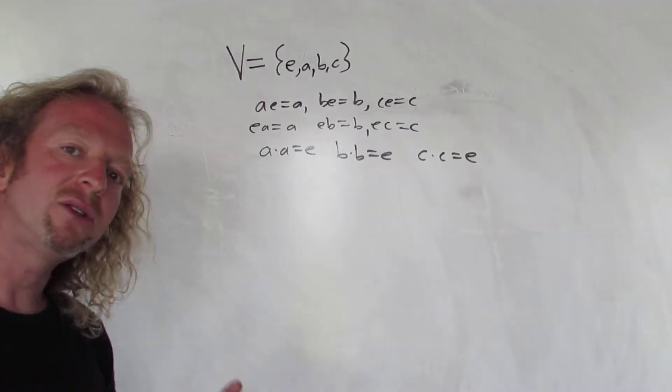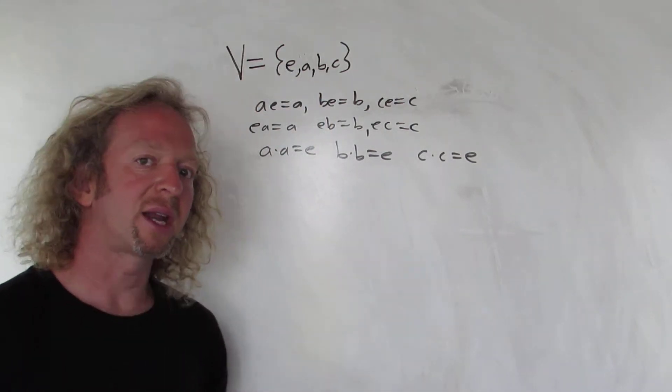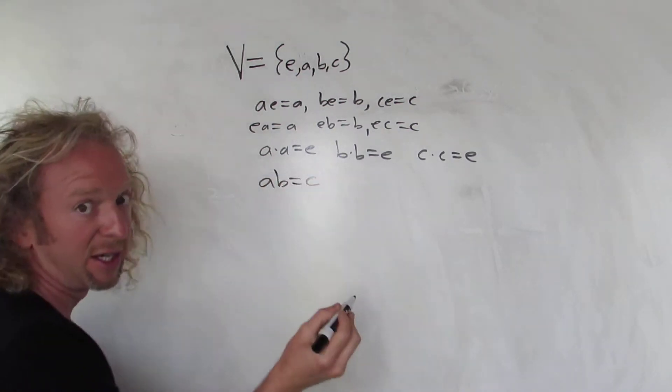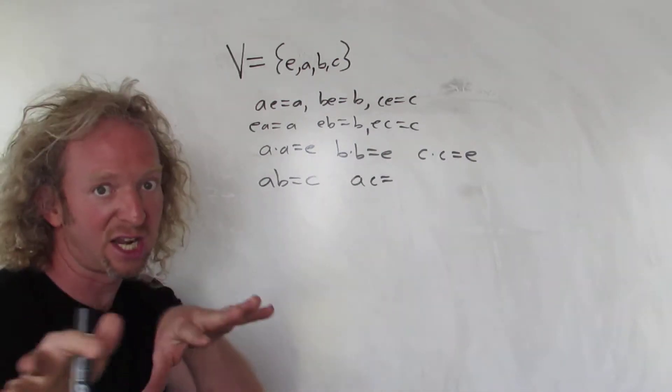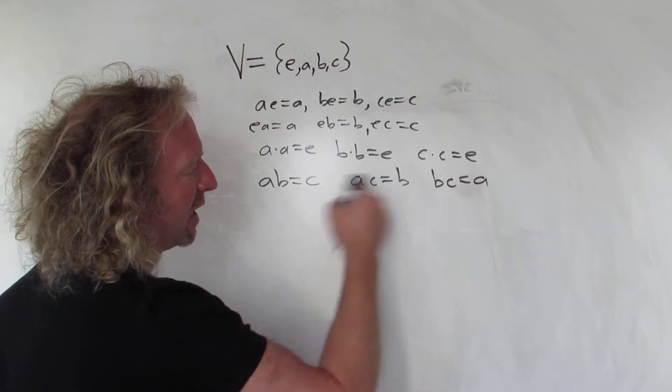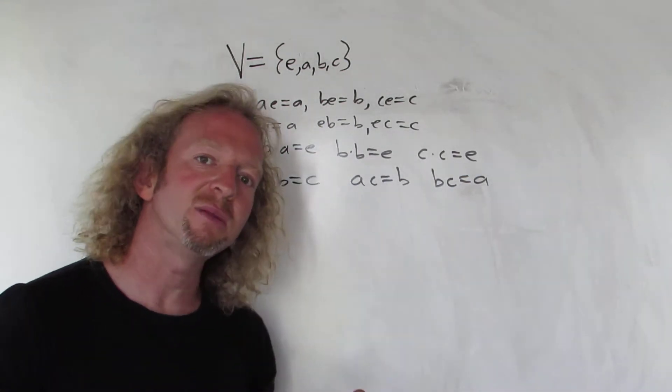And if you take any two distinct non-identity elements and you multiply them together, you get the other non-identity element. So for example, if you do AB, you're going to get C. If you do AC, you'll get the other one. So if you do BC, you'll get A, and multiplication here is commutative. CB is also A, so it is an abelian group.